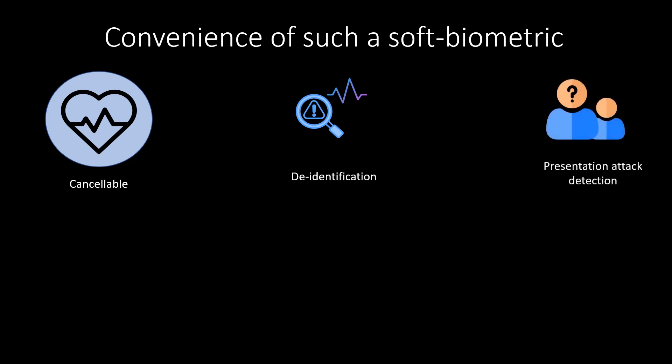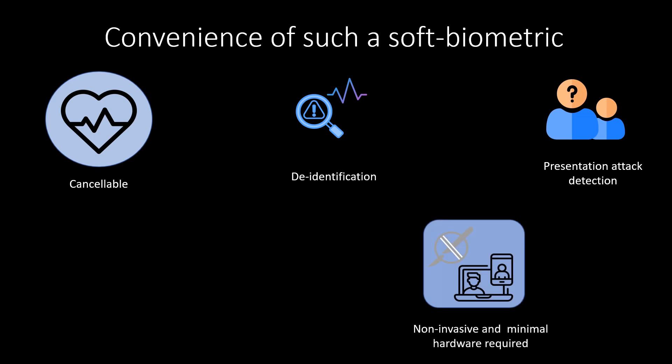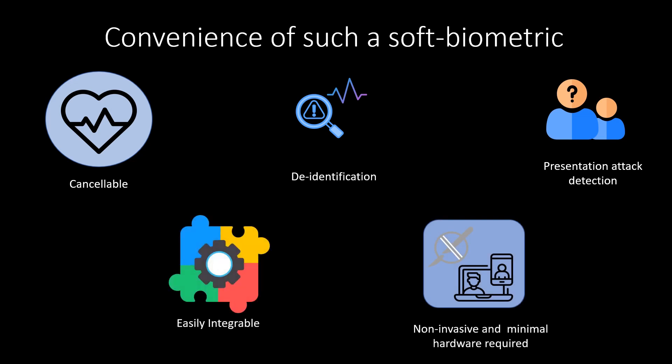To summarize the advantages, heart rate information can be transformed into a cancelable biometric by using appropriate hashing. It fulfills the objective of de-identification because the actual individual cannot be detected immediately from the heart rate. The behavior metric is resistant to presentation attacks as seen with deepfakes. Because it only requires a camera feed, it is non-invasive and also easily integrable.